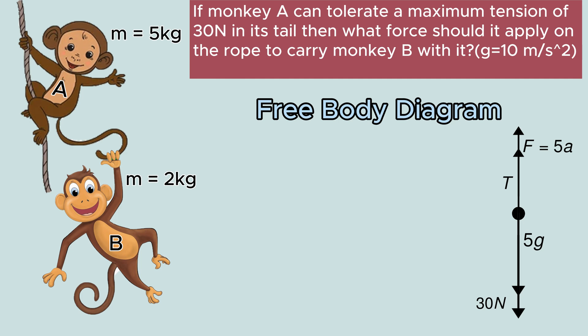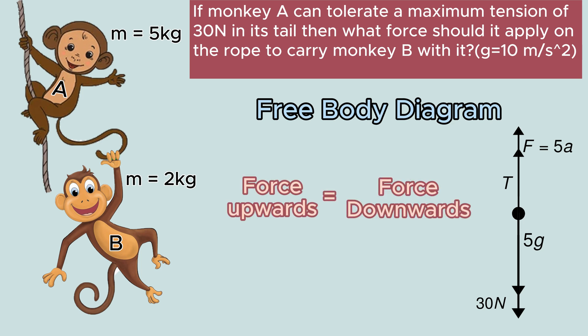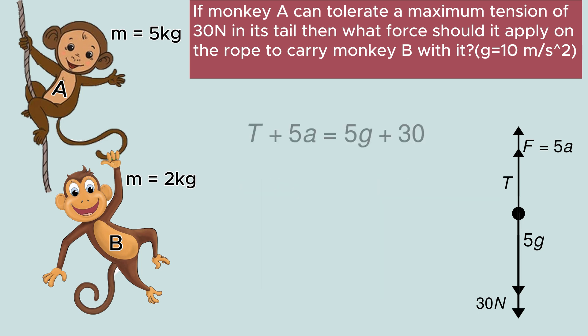For monkey A to be in equilibrium, the net upward force must be equal to the net downward force. Therefore, we have T plus 5A equals 5g plus 30. On transposing, we can get T equals 5g plus 30 minus 5A. This is our equation 1.